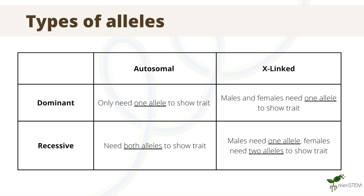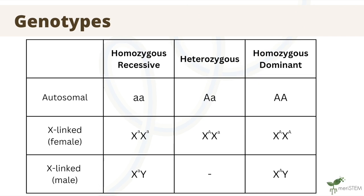In all cases where an allele is dominant, only one needs to be present to be expressed. Contrastingly, both alleles need to be the recessive allele in order to show a recessive trait, except in biological males for X-linked traits, because they only have one X chromosome and thus only one X-linked allele. Lowercase letters indicate a recessive allele and uppercase letters represent a dominant allele. Biological males only have one X chromosome and therefore cannot be heterozygous for X-linked traits.